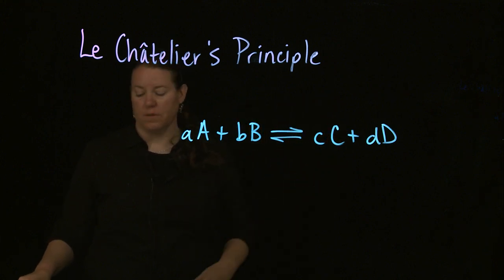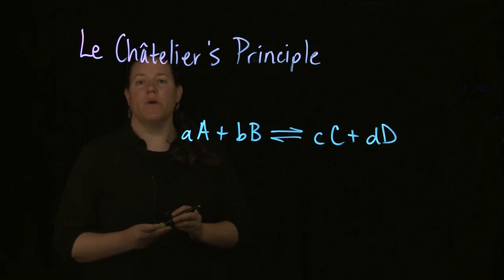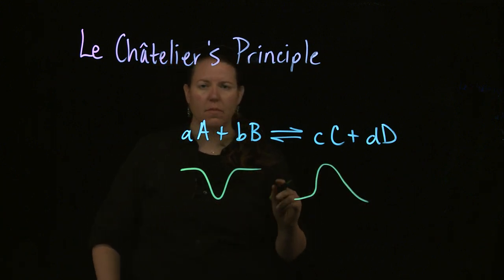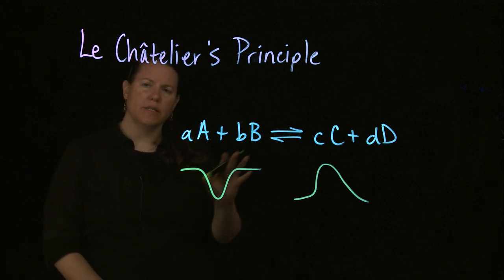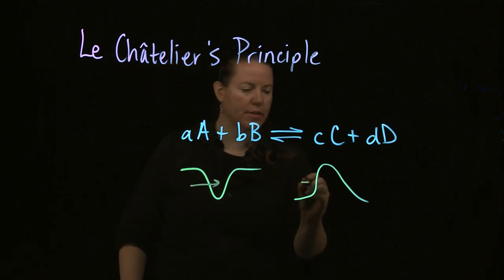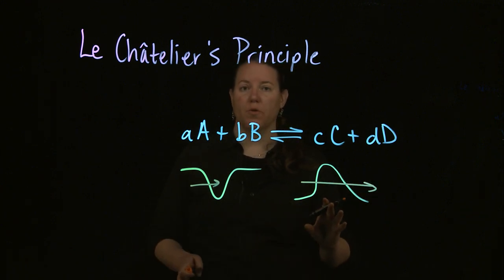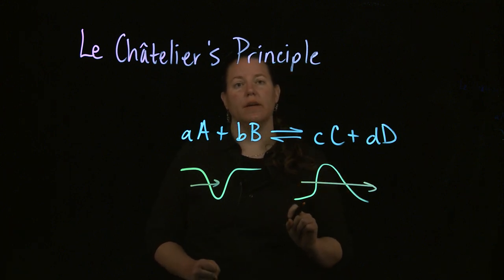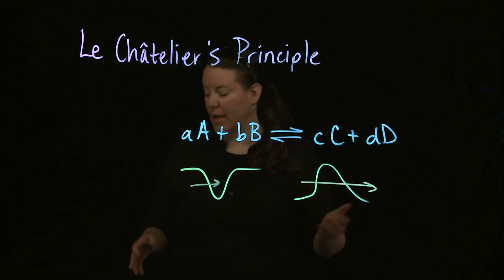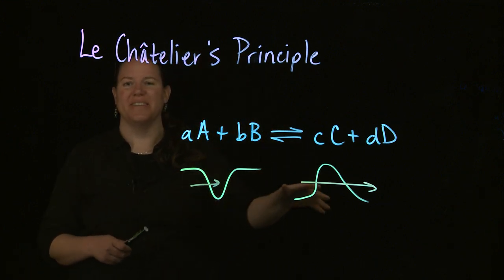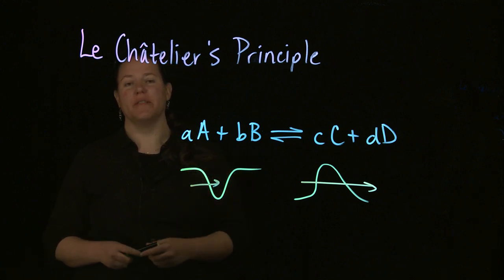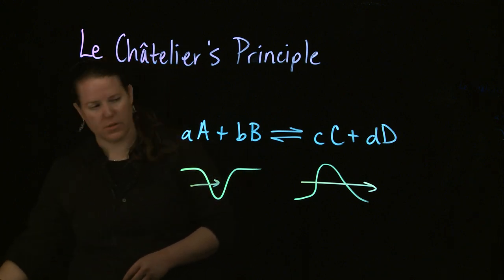We can think about it as creating a well or a hole, or creating a hill. Basically what the system is going to do is work to flatten that. It's either going to try to fill in the hole or flatten out the hill. If you've created a hill on one side, it's going to move to the opposite side to flatten it. If it has a hole, it's going to work towards the same side the hole is on so that it can fill in that hole.